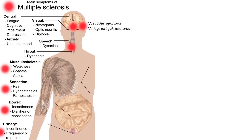Cognitive symptoms include memory impairment, impairment of executive functions, and trouble concentrating. Psychiatric symptoms include depression and anxiety. Sexual problems such as erectile dysfunction are also associated with multiple sclerosis.